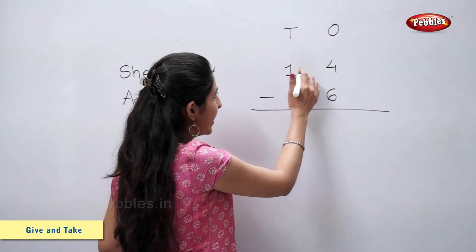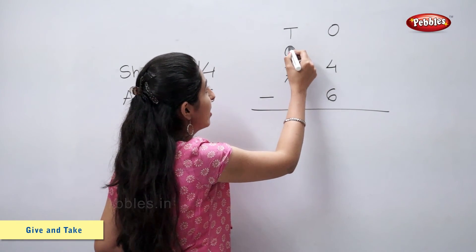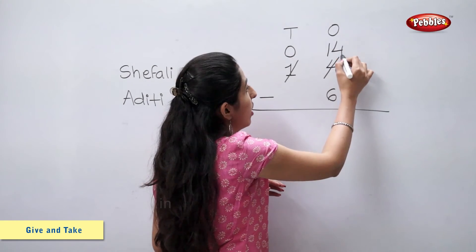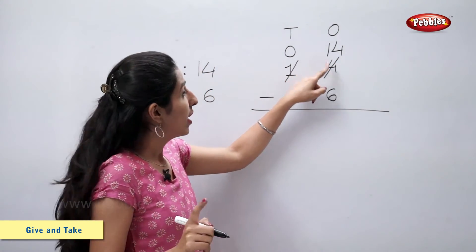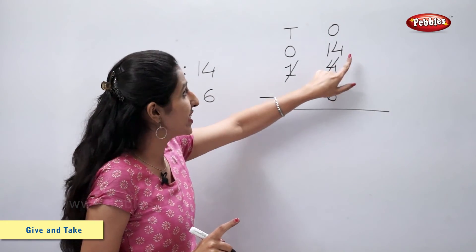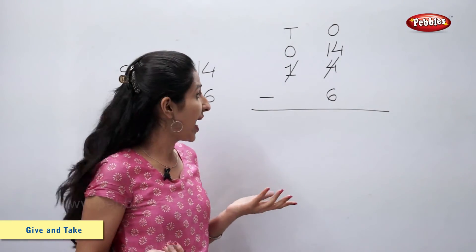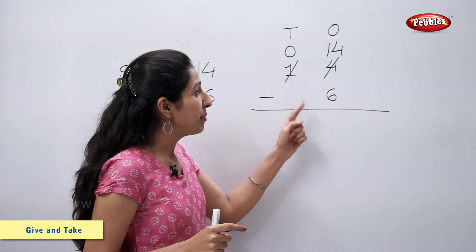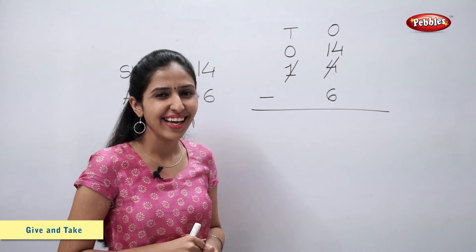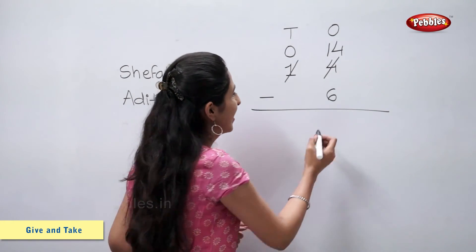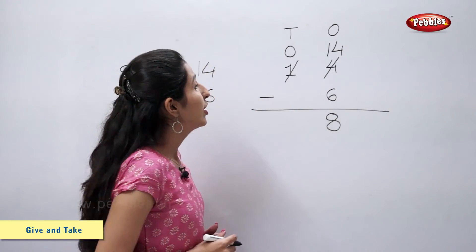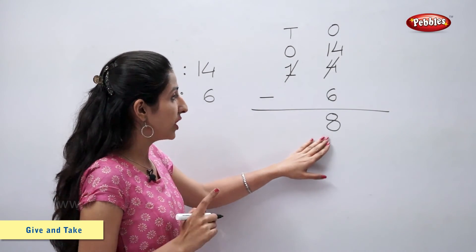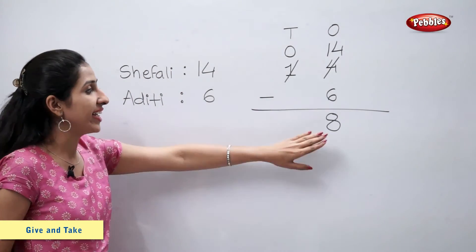So this 1 ten goes away and becomes 0. 4 now becomes 14, because 10 plus 4 equals 14. Now we can subtract 6 from 14. 14 minus 6 is equal to 8. So now Shefali is left with 8 pearls.